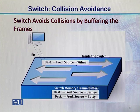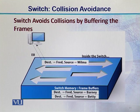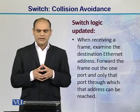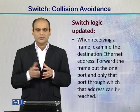For example, the source is Wilma and the destination is Fred — that frame is sent to Fred first. The other two sources, Barney and Betty, have their frames held in the memory buffer. So Wilma's frame is transmitted to Fred first, and then Barney's and Betty's frames follow sequentially. This is how we update the switch logic.